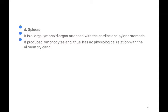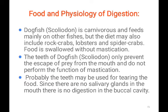The next and most important gland is the spleen. It is a large lymphoid organ attached to the cardiac and pyloric stomach. It produces lymphocytes but has no direct physiological relation with the digestive system. This concludes the discussion of the digestive system.